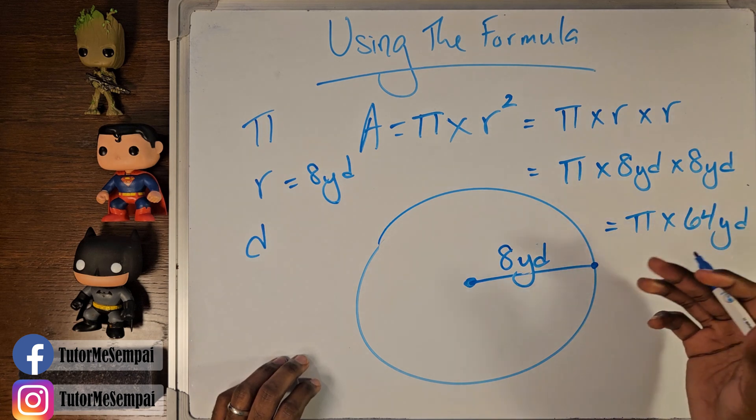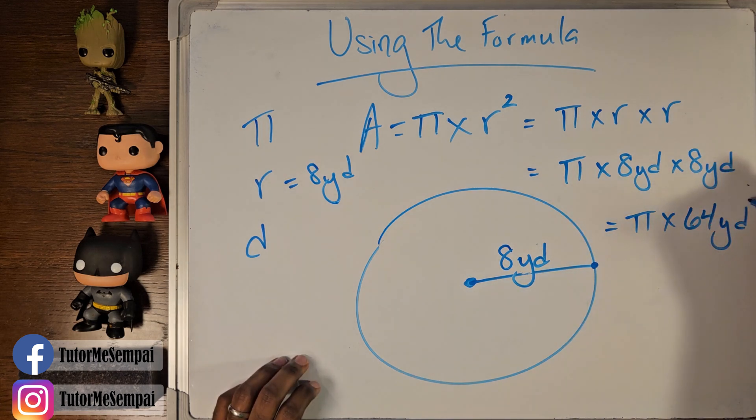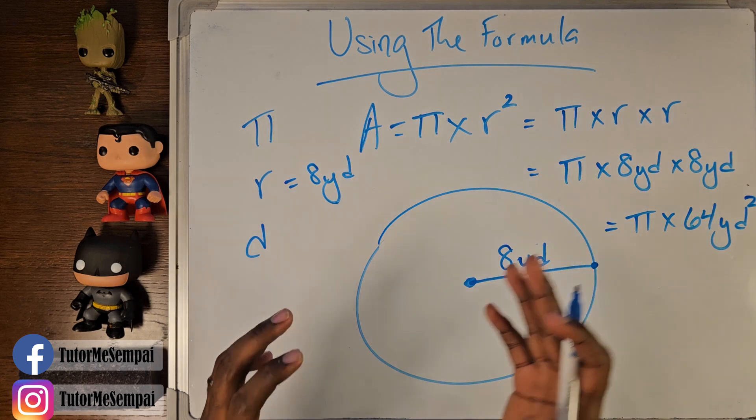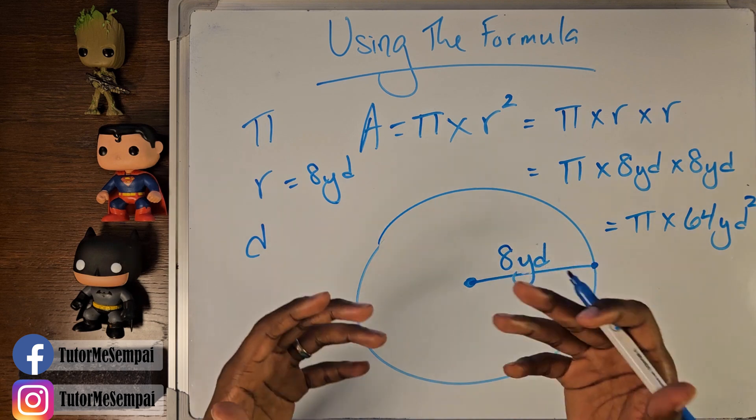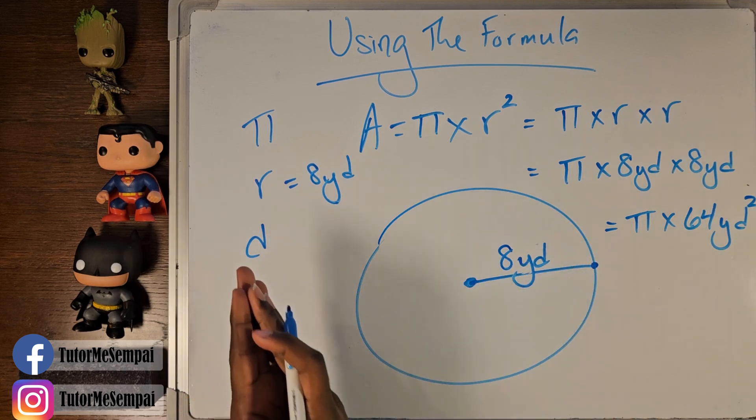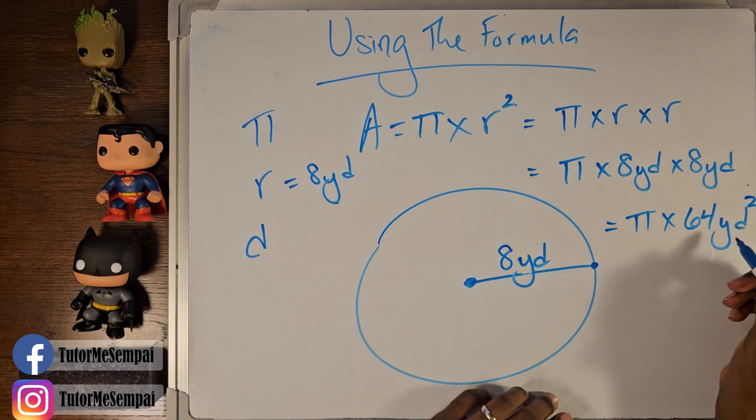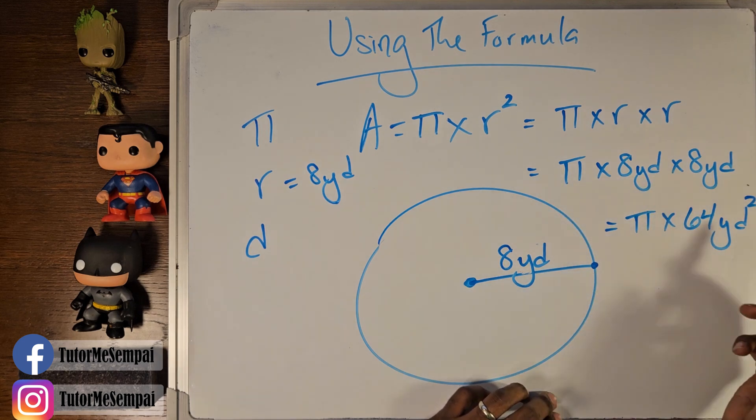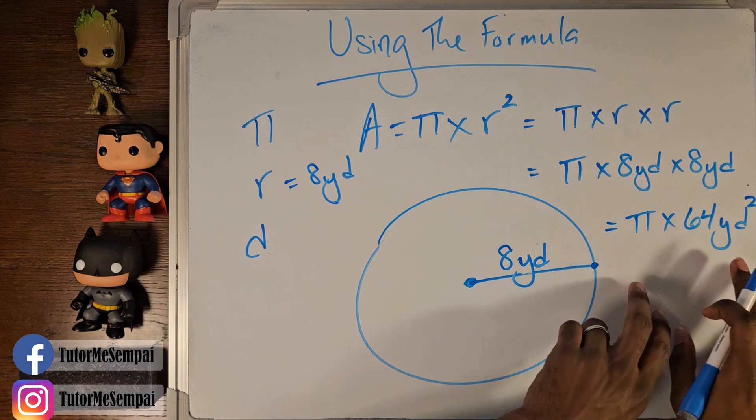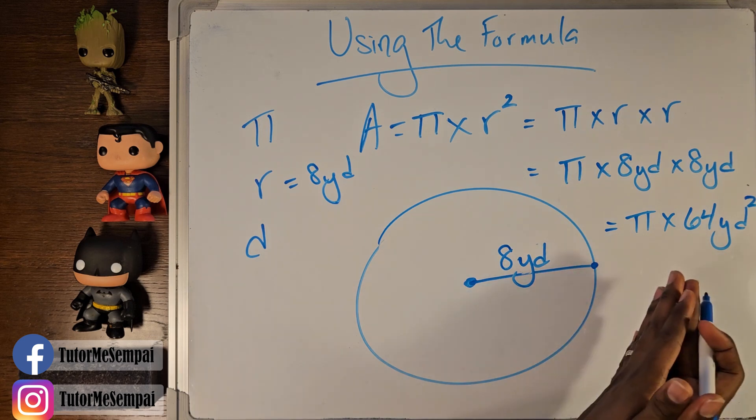What? Yards squared. Because remember, we're finding area. And that's going to be very similar to what we did before. We're always going to have square units after we're finding area. So we have to square the units that we start with. If we start with yards, we're going to have to square our yards.